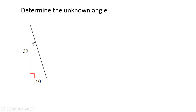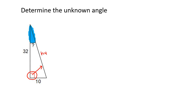The goal of this question is to find the unknown angle. Highlight that angle, then go label your triangle. We know the side opposite the 90° is always called the hypotenuse. The side opposite the angle you are looking at is called the opposite, and the other side is called the adjacent.